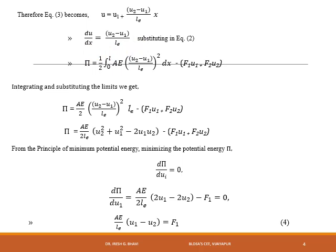Substituting the value of du/dx into the potential energy expression π (equation 2), we get π = one-half times the integral from 0 to Le of A·E·[(u2 − u1)/Le]² dx − (F1·u1 + F2·u2). Integrating and simplifying, this becomes (Ae/2Le)·(u2 − u1)² − (F1·u1 + F2·u2), which on expanding gives (Ae/2Le)·(u2² + u1² − 2·u1·u2) minus (F1·u1 + F2·u2).